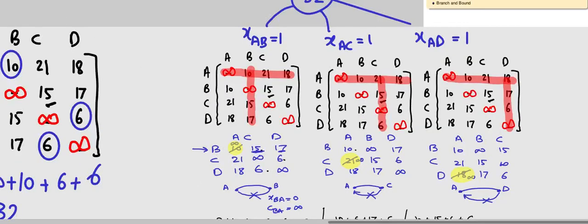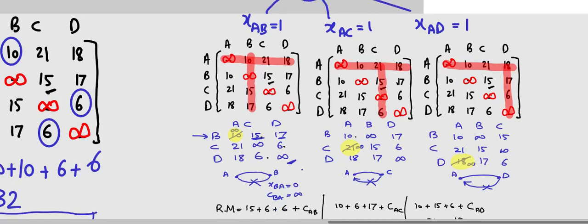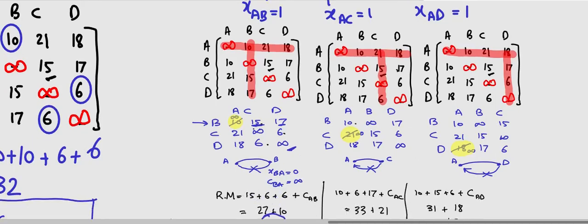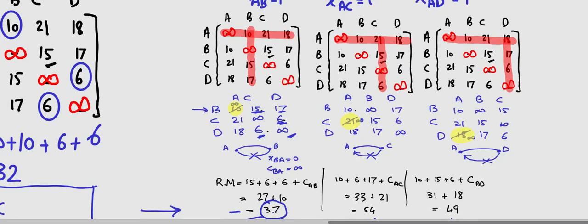With the reduced subspace, we compute the row minimum again. For the A-to-B branch, the row minimum gives 15, 6, and 6, plus the cost of moving from A to B, resulting in 37. Performing the same exercise for the other branches, the row minimums are 54 and 49. Since we use this as a guiding factor, we choose the minimum value of 37 and proceed with expanding that branch.